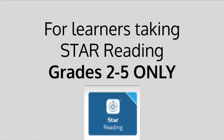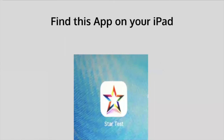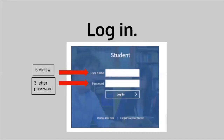In this section, we are going to cover information for learners taking STAR Reading. This section is only for second to fifth grade students. Fast forward to find out more information on STAR Math. For this test, you will need your iPad and headphones. If you do not hear the test, make sure the volume is up and that your headphones are plugged in and working properly. Find this app on your iPad — it is white and looks like a star. When you open the app, select 'I'm a student.' Students will log in using their five-number username and three-letter password. If you cannot remember your username or password, please contact your teacher.